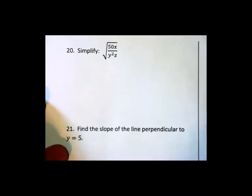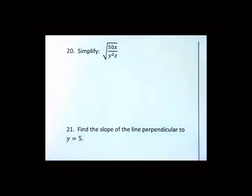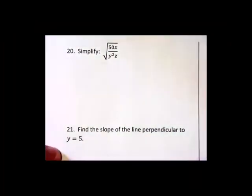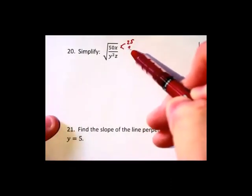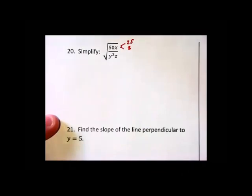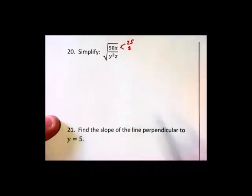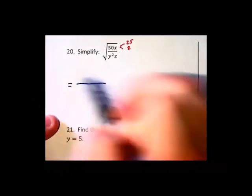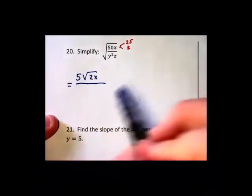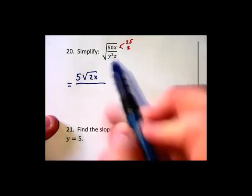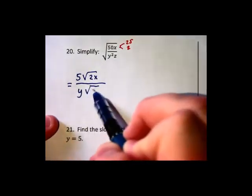Continuing on here, now we are going to simplify. I do not see anything that cancels inside. I do notice however that the 50 can break down into a 25 times 2 up above. So before I rationalize I'm going to rewrite this as 5 root 2x over down below the pair of y's comes out as a y root z.